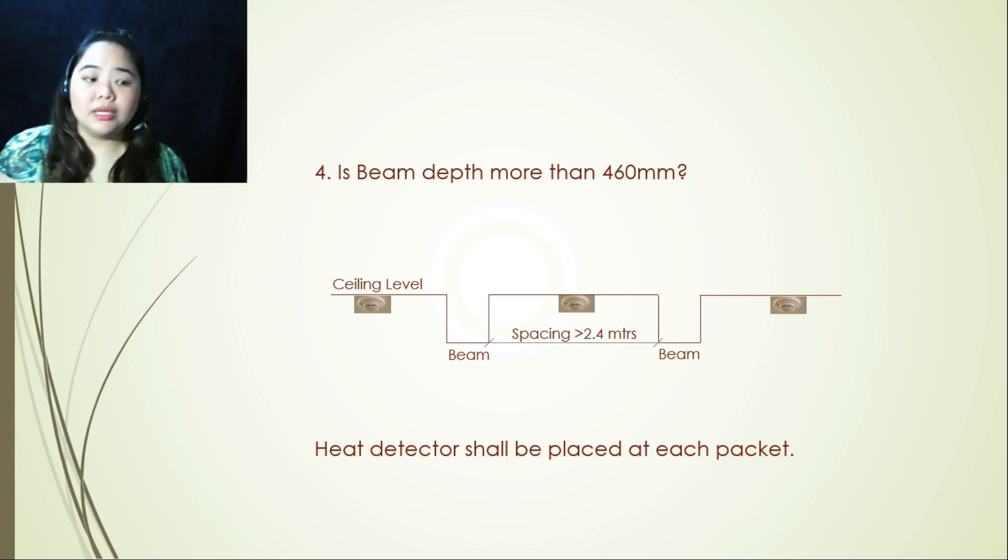On to our last argument: beam depth more than 460 millimeters. And also, if the spacing is more than 2.4 meters, because of the spacing and the distance, you should now put the smoke detector in each pocket. So let's take a look at the illustration here. On to your ceiling underside, and then here another one, then you can also place it here. So again, heat detector shall be placed at each pocket.